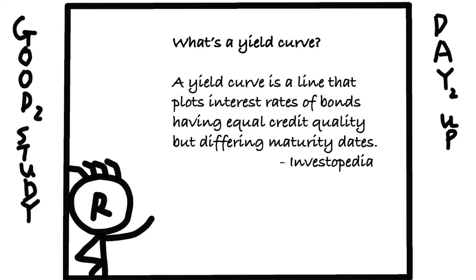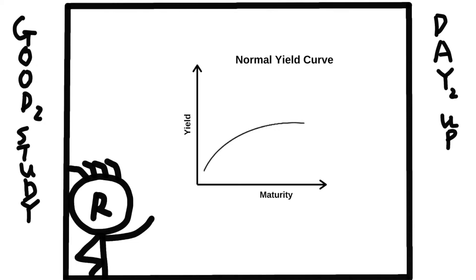A yield curve is a line that plots interest rates of bonds having equal credit quality but different maturity dates. This is what a normal yield curve should look like — it's upward sloping and concave in shape.